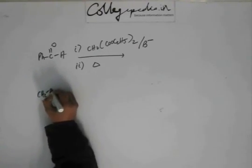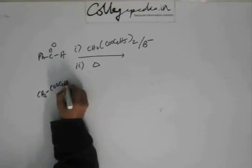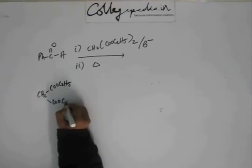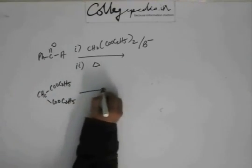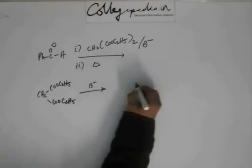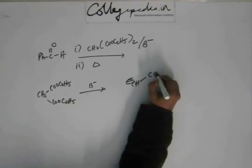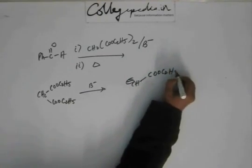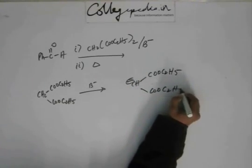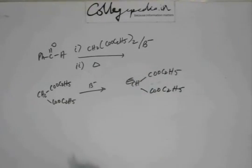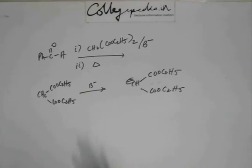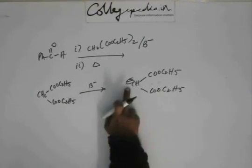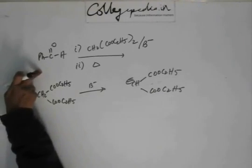A negative charge on carbon is going to develop. This negative charge will go and attack C=O — that's very obvious, natural, and intuitive now. We have seen this in many reactions before. So this negative charge is going to attack the C=O of benzaldehyde.